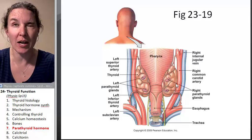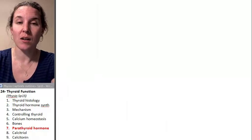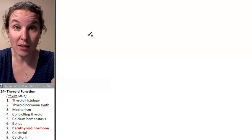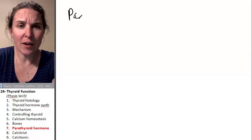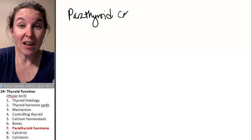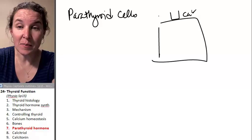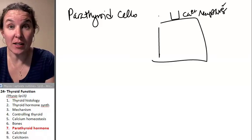So imagine this. The parathyroid glands have receptors that monitor calcium levels. So there are parathyroid cells that have calcium receptors, and they monitor calcium levels.